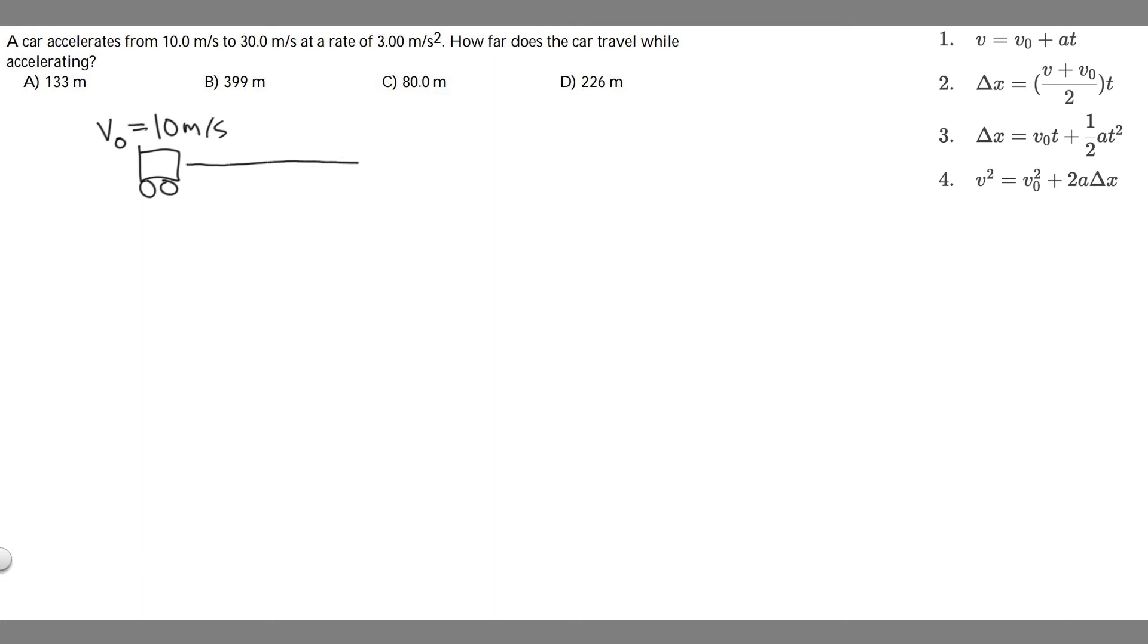We know then it's going to travel some distance, and then at the end of its interval, it's going to go from 10 all the way to 30. So the velocity here is going to be 30 meters per second. And we know the rate it's going to do this, the acceleration, is 3 meters per second squared.